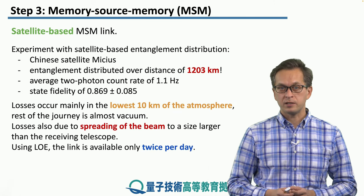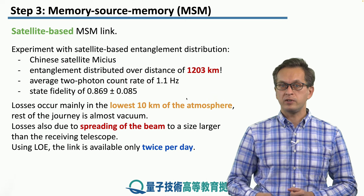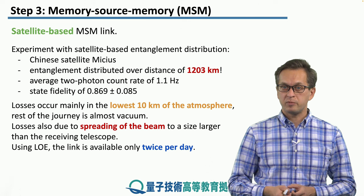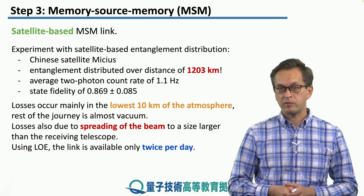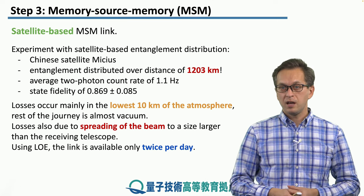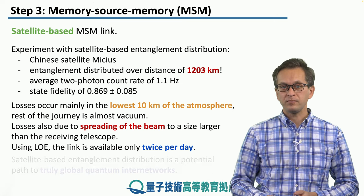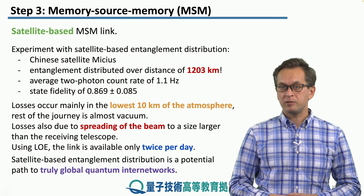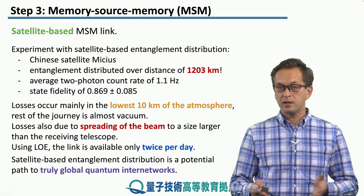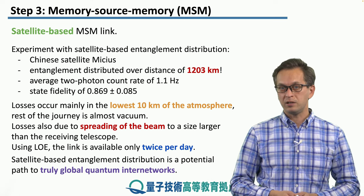There were some problems with this implementation of the MSM link. Notably, losses occurred mainly in the lowest 10 kilometers of the atmosphere; above that, the photons were essentially traveling in vacuum in terms of attenuation. The engineers also had to deal with the spreading of the beam from the satellite becoming much larger than the radius of the receiving telescope. Additionally, because the satellite was placed in LEO, or lower Earth orbit, the link was only available twice per day for six minutes. Despite these shortcomings, satellite-based entanglement distribution seems like a potentially attractive path to a truly global quantum internet, purely because it's much simpler to deploy — connecting two ground stations 1,200 km apart would otherwise require extremely many repeater stations, whereas here we just need one satellite.